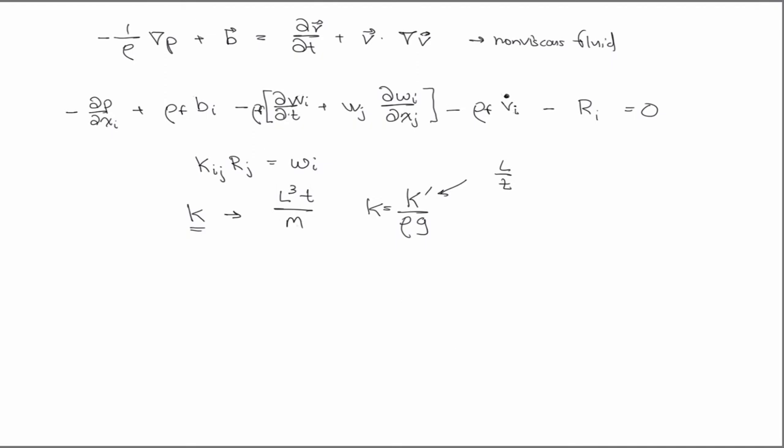And you can see that that works out if you, R should have units of momentum. So if you take the inverse of K and multiply by W, W has units of velocity, right? So then you have the inverse of K would have units of mass over length cubed time.